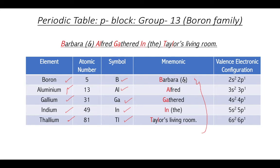The mnemonic sentence to remember all five Group 13 elements is: 'Barbara and Alfred gathered in the Tellers living room.' From Barbara, the capital B stands for boron; Alfred's Al is for aluminium; gathered's G is for gallium; 'in' gives In for indium; and from Tellers you pick T and L, which stands for thallium.